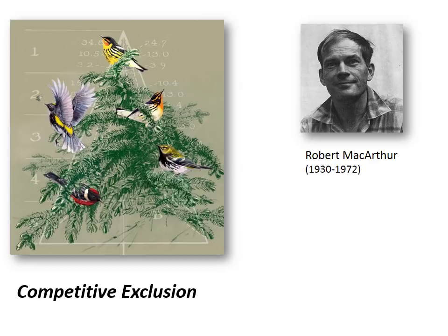MacArthur questioned why competition wasn't excluding some of these species. All of these species were about the same size and shape, and they all feed on insects, and to MacArthur it was puzzling that they could all live together in such an apparently simple habitat.